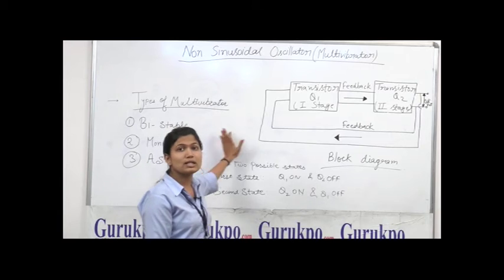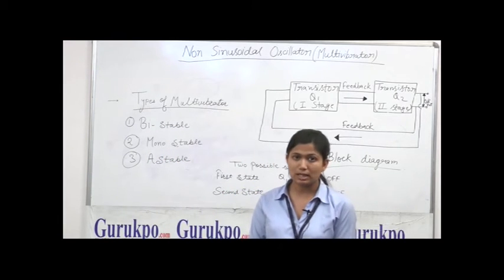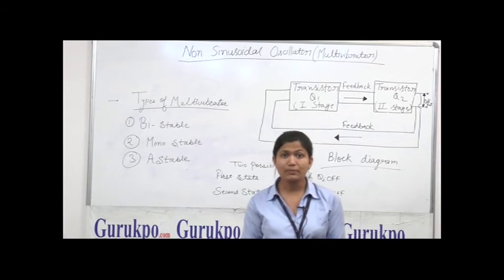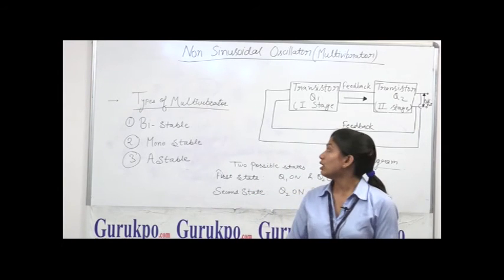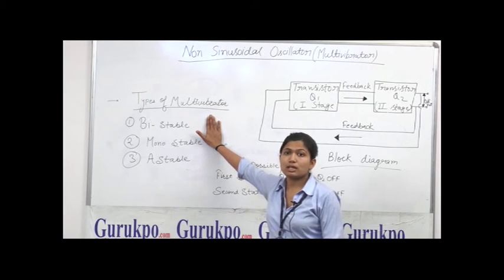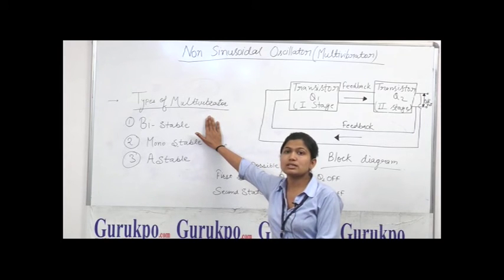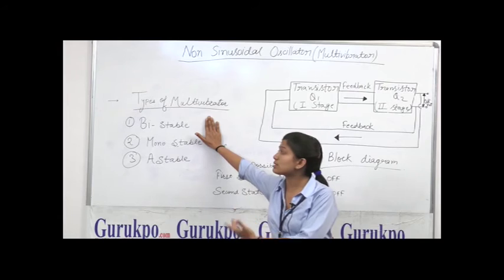As the name indicates, bistable multivibrator means there are two stable states in a multivibrator. In bistable multivibrator, the state in which the multivibrator is, is stable, and it changes its state when it is triggered by external signal.